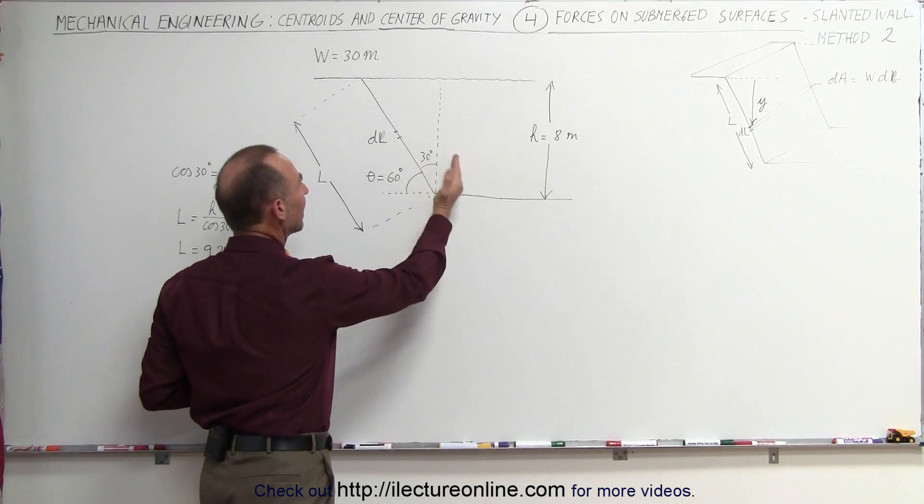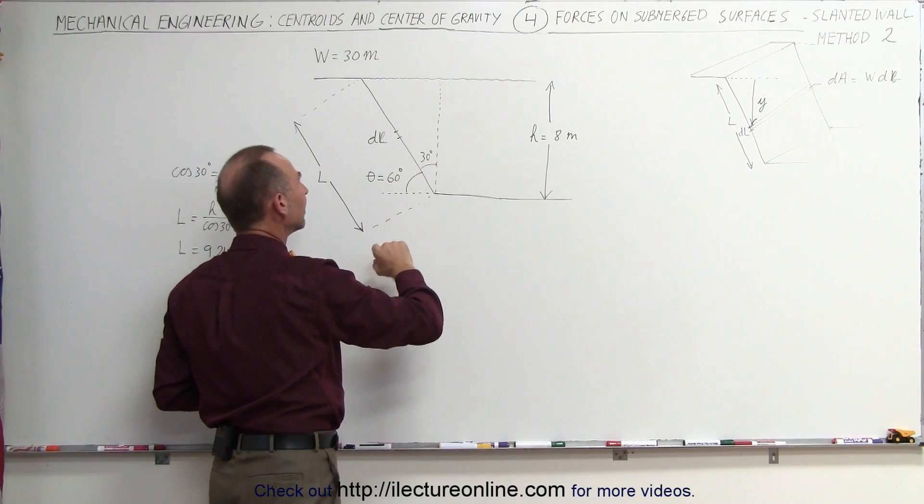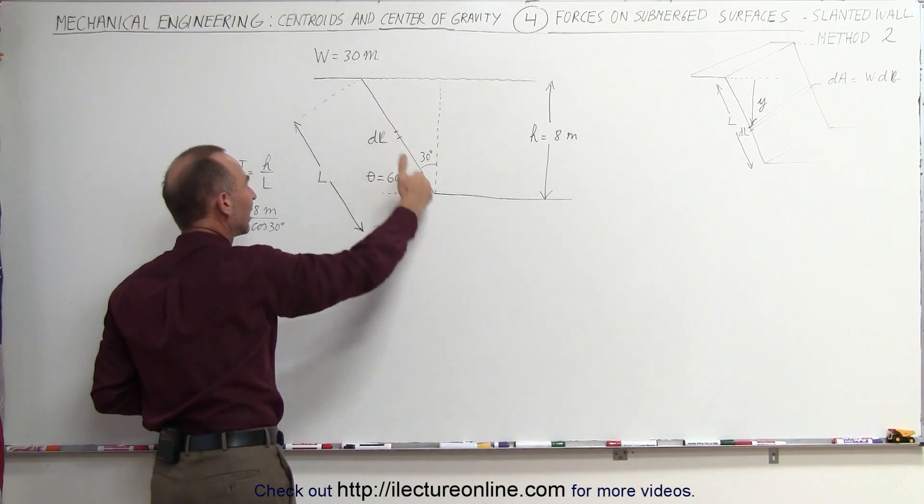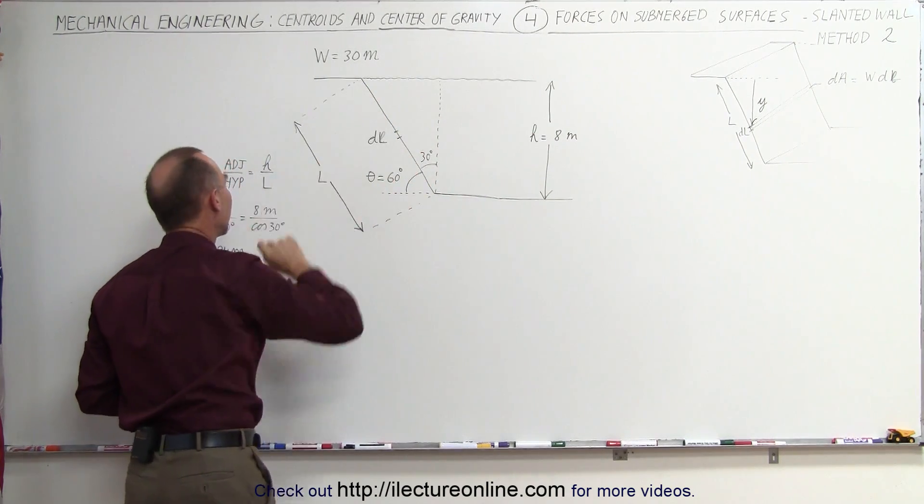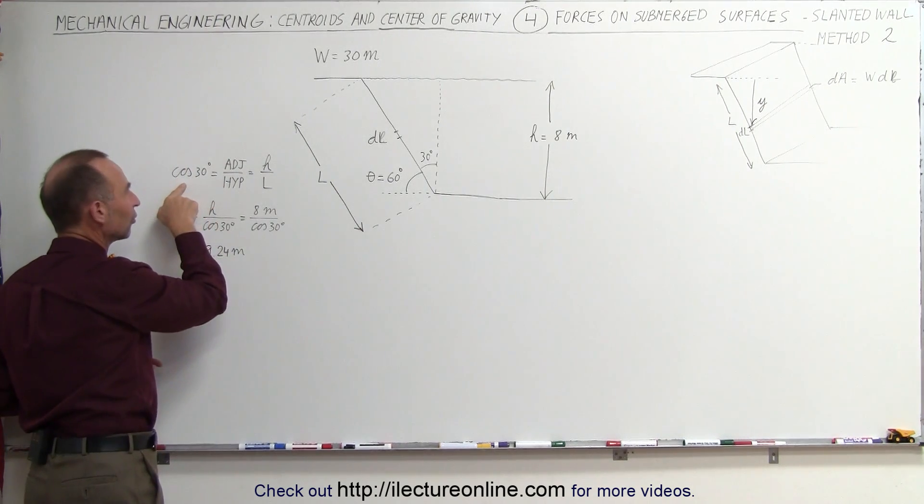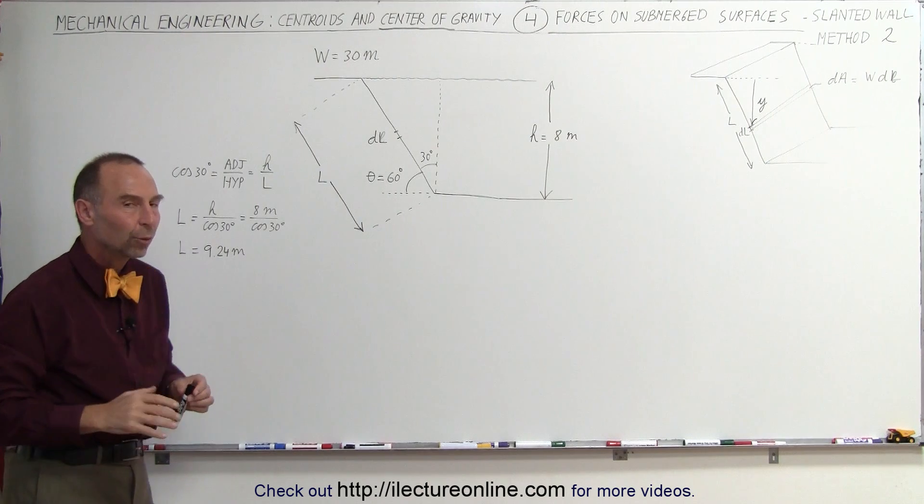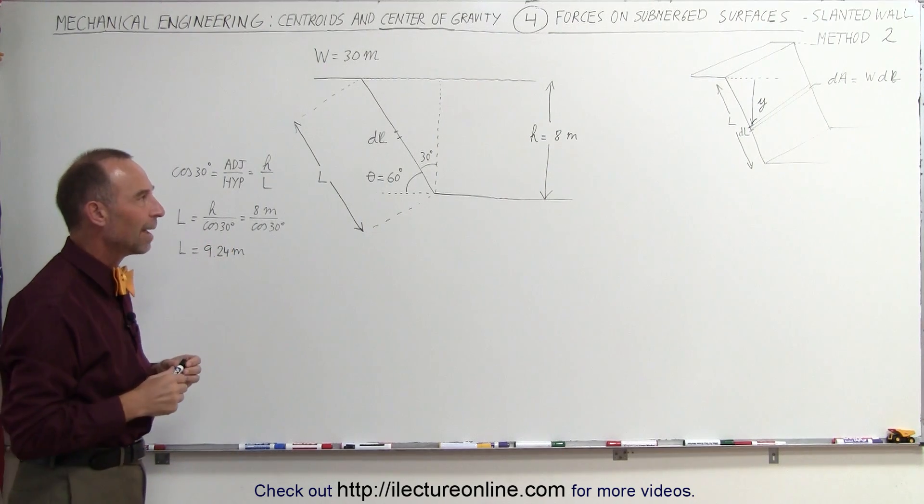The dam is slanted at an angle of 30 degrees relative to the vertical. If the height of the water is 8 meters, then the slanted slope of the dam, called L, can be calculated using the cosine of 30 degrees. Therefore, L is 9.24 meters. So what is the total force on that slanted portion of the dam?